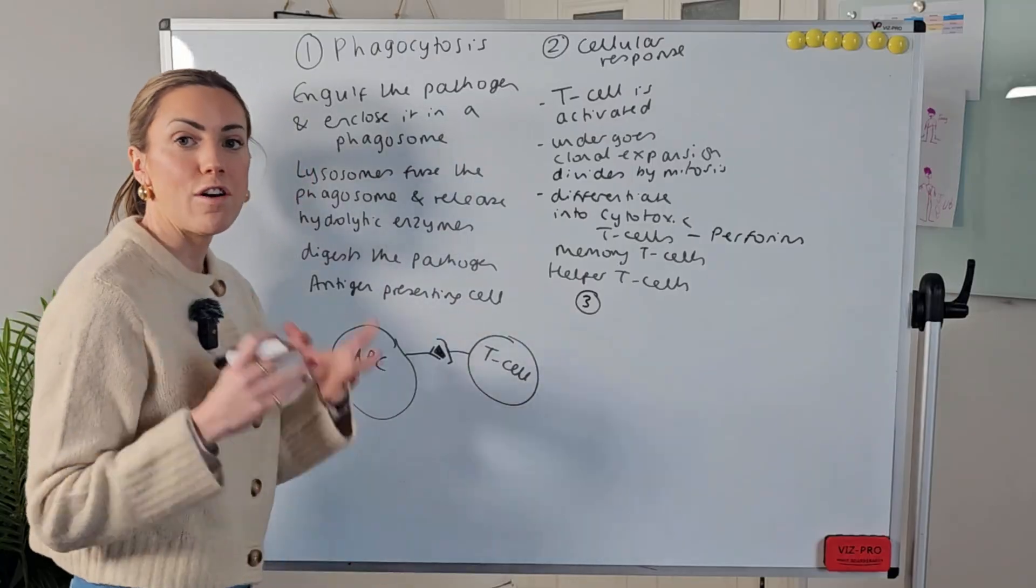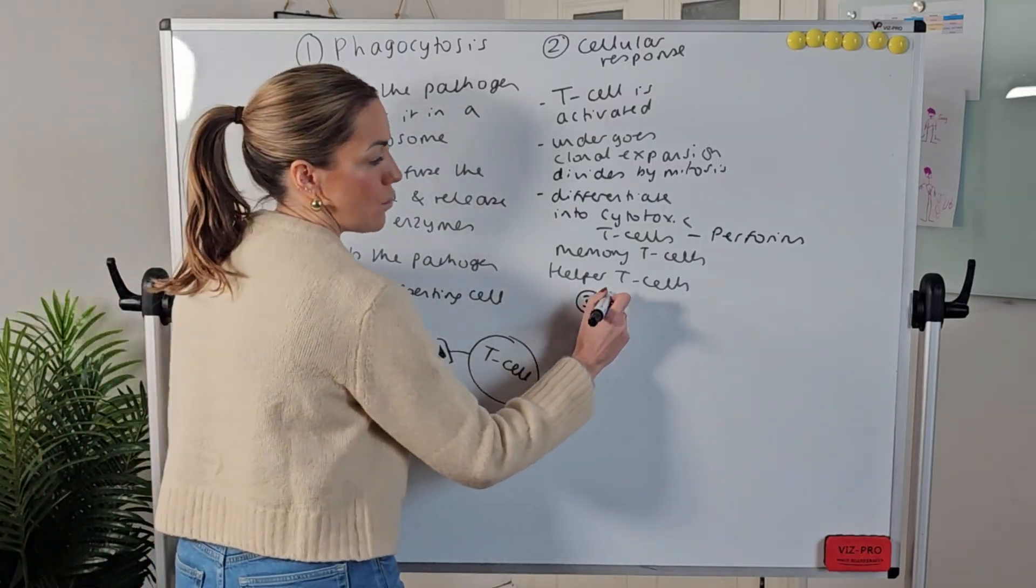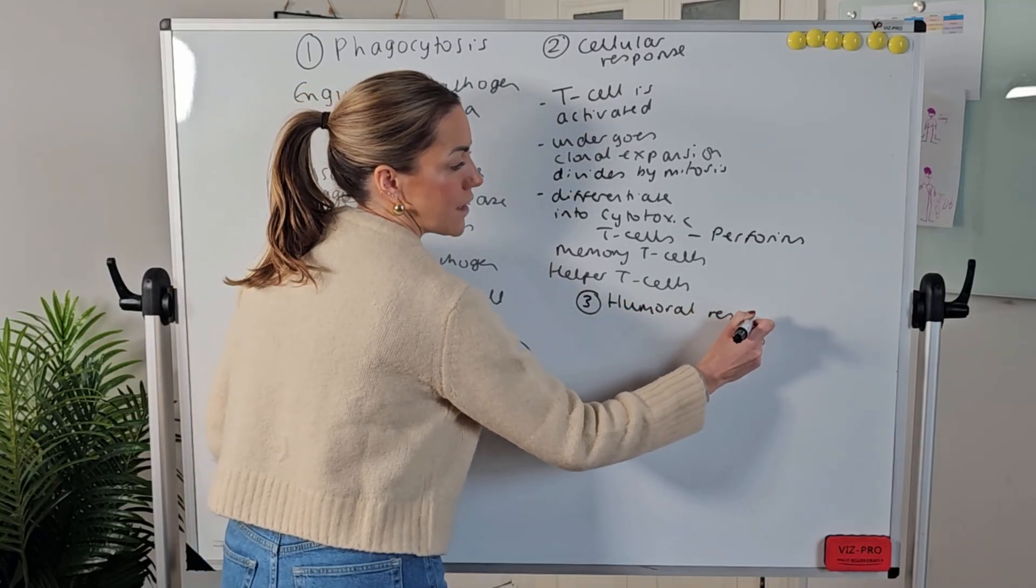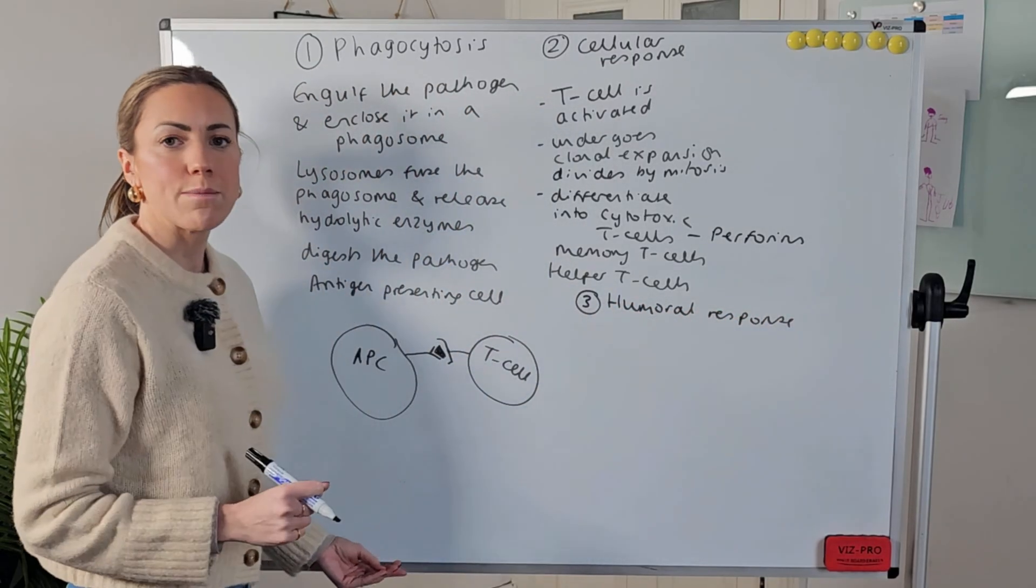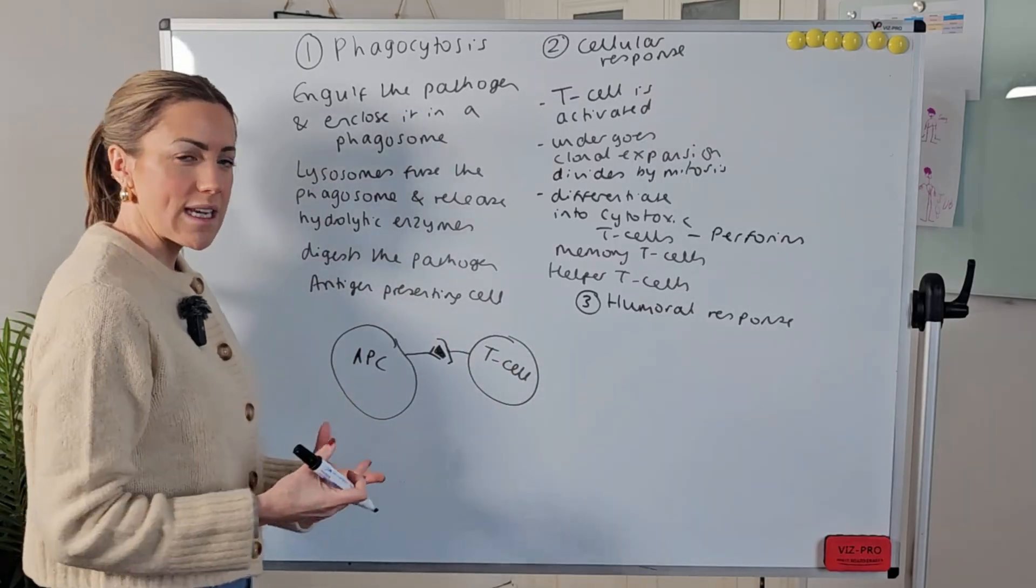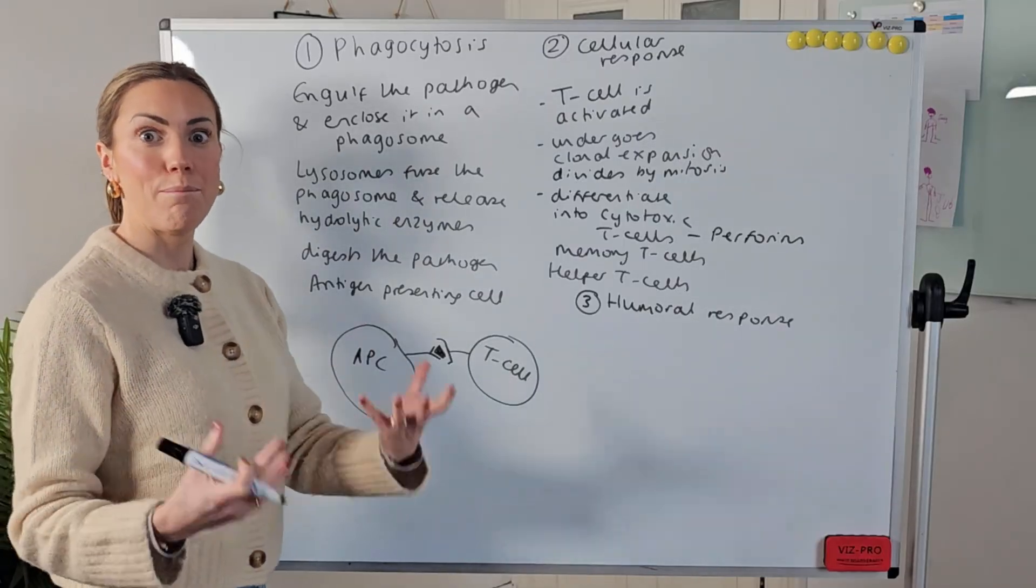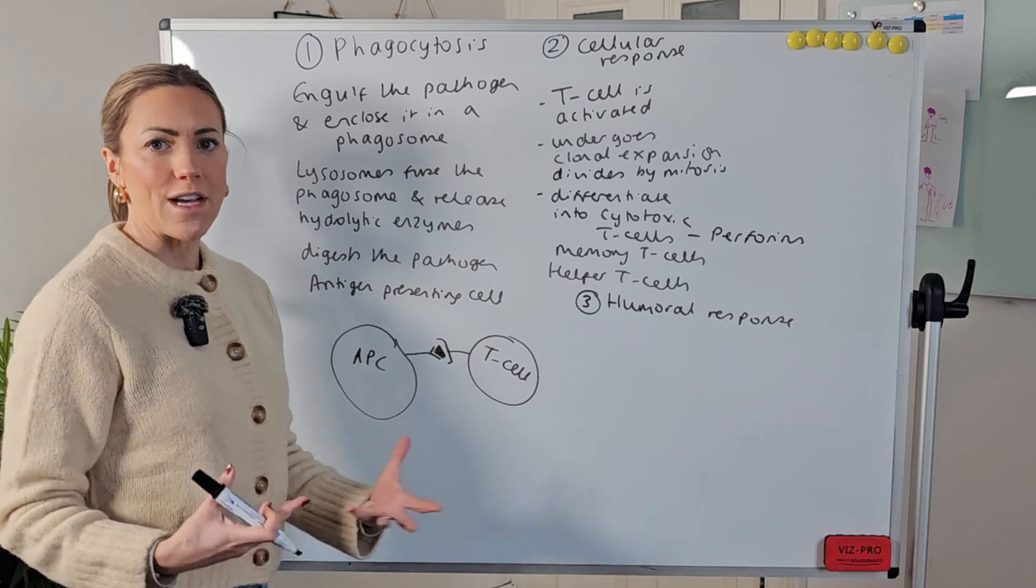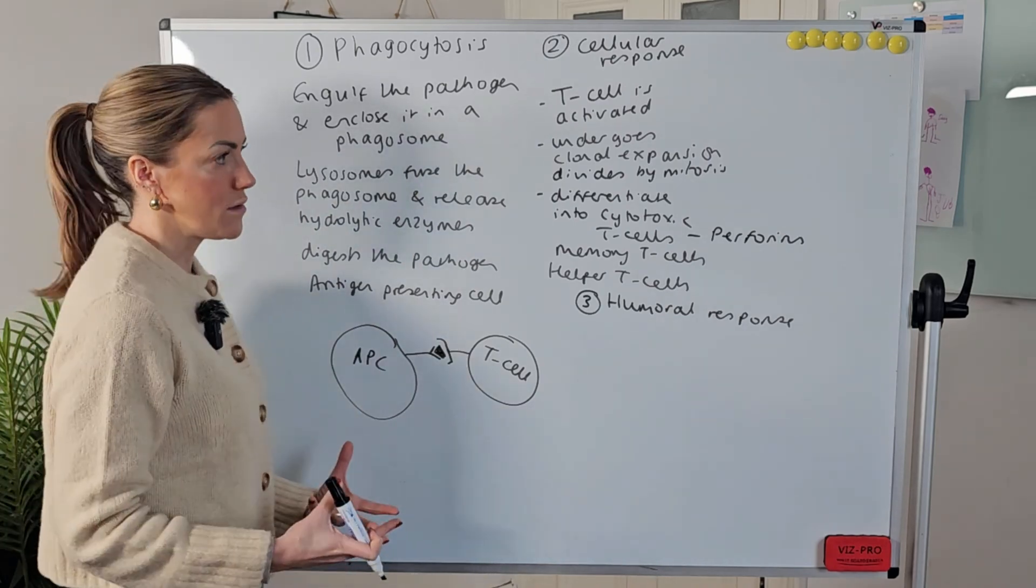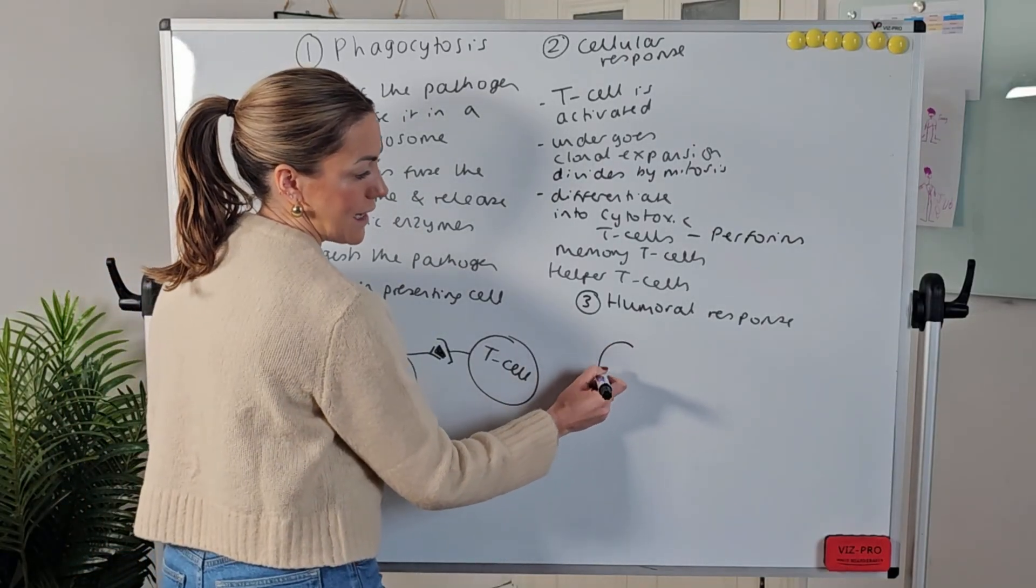Now the third part of our story involves the B lymphocytes, the B cell response which is known as the humoral response. The reason it's known as the humoral response is because B cells called plasma cells make antibodies and antibodies travel in our blood which is an example of a bodily fluid and an old-fashioned word for that I suppose was humor so it's called the humoral response but the way this works is a B cell if I draw a B cell here.